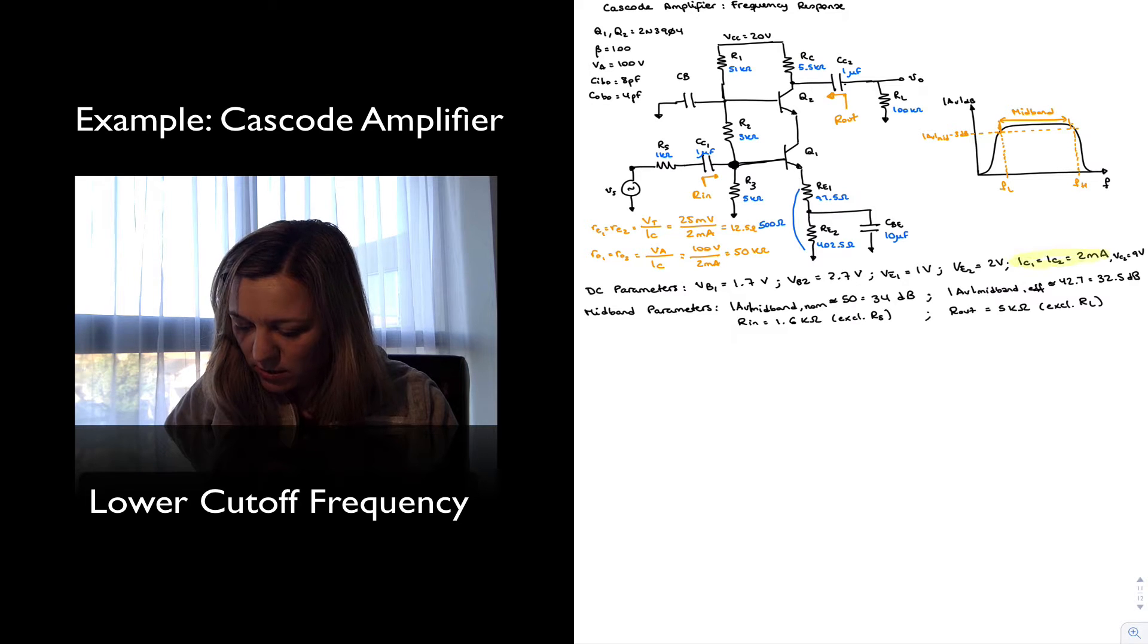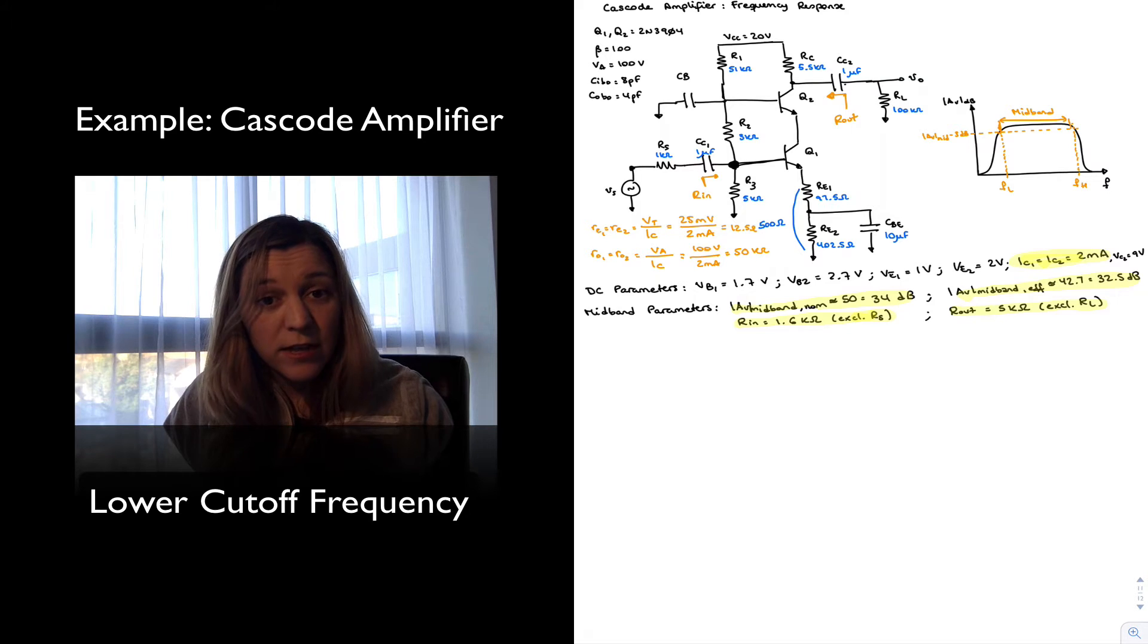So here is our collector current, our nominal midband gain, our effective midband gain, and then RIN and Rout. I've noted that in my RIN calculation I have excluded RS, so it's RIN looking into the base of Q1. And in my Rout calculation I have excluded RL, so it's just the resistance looking into the collector of Q2.